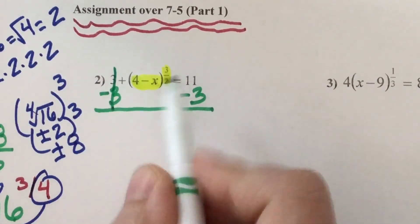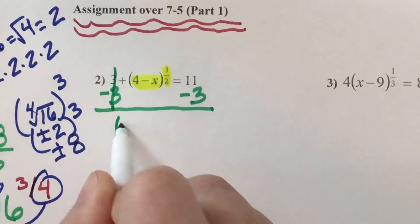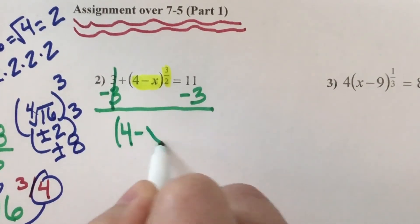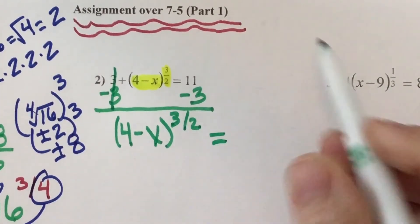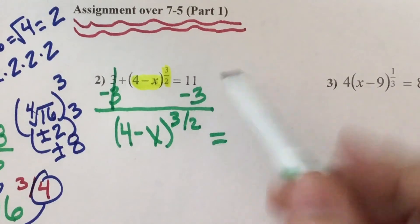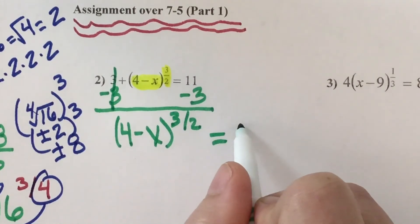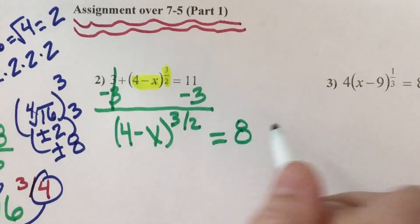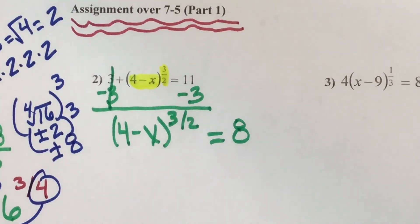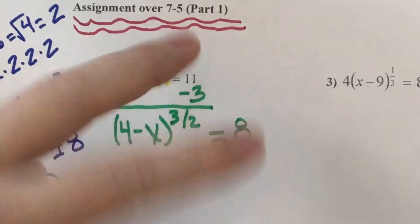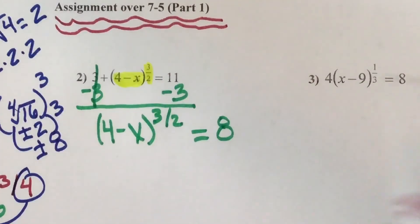If it would have been smushed, like over here where the 4 is smushed, I would get rid of that 4 by dividing. But this 3 is not smushed with the parentheses, so I get rid of that 3 by subtracting because it's a positive 3. So this is 0. The (4 minus x) to the 3/2 comes down, and 11 minus 3 is 8. Now I have my variable in parentheses with the fraction exponent by itself, so I'm ready for the reciprocal exponent — which is 2/3.